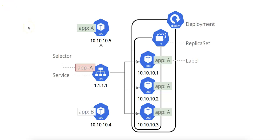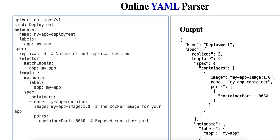Now let's take a look at a sample deployment.yaml file. The apiVersion field specifies the API version of Kubernetes resources to use — apps/v1 is the version for managing StatefulSets, DaemonSets, and Deployments in Kubernetes. The kind field defines the type of Kubernetes resource; here it's a Deployment, which is used to create and manage replica sets and pods.